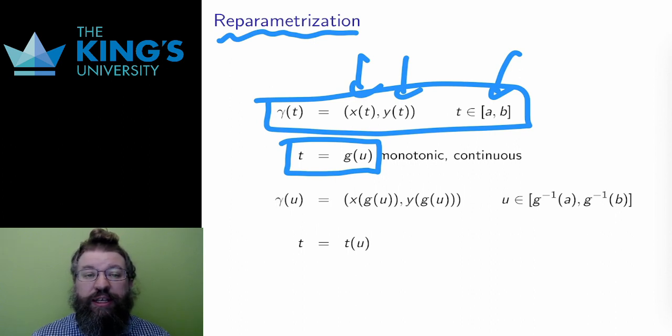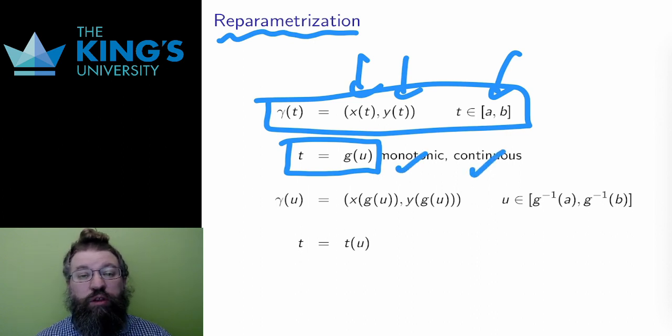What is important about g is that it is monotonic and continuous. Monotonic means that the movement along the curve will still be in one direction, though it can go backwards compared with the original.